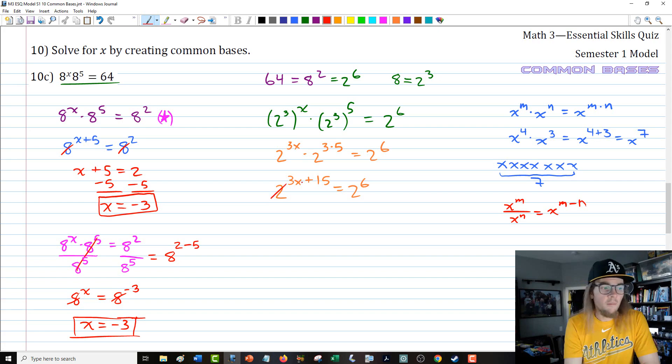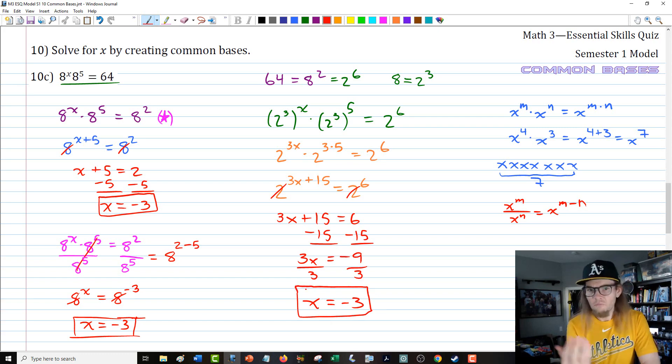Three times five is 15, three times x is 3x. We have 2 to a power times 2 to a power, so we write this as 2 to the 3x plus 15 equals 2 to the sixth. The bases are the same, so we can equate the powers. 3x plus 15 equals 6. Subtract 15 on both sides, we get 3x equals negative 9. Just because it's not efficient doesn't mean it's not correct. There's not one correct way to do this.